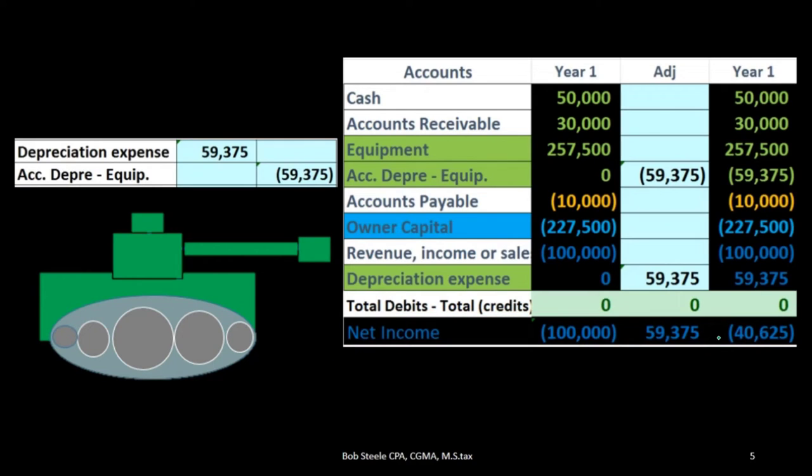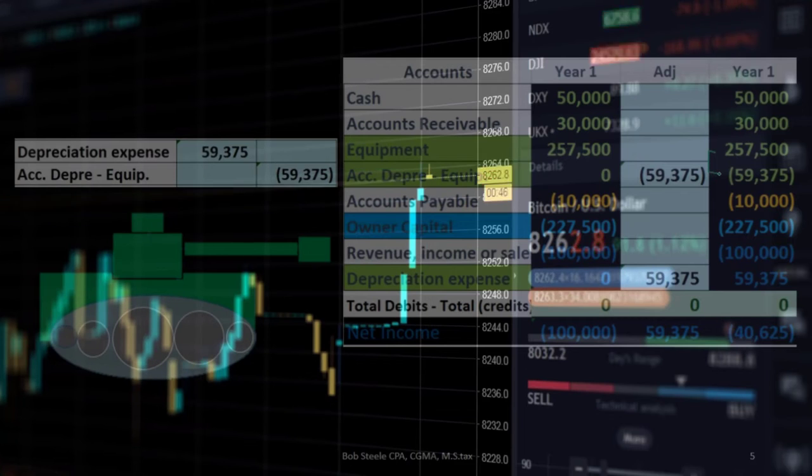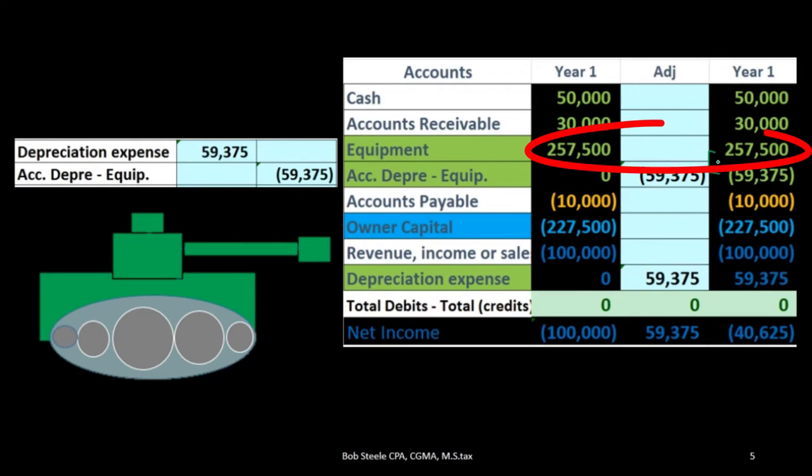We're going to record a contra asset, an asset with a credit balance, in accumulated depreciation of $59,375. The book value is the cost of $257,500 less the accumulated depreciation of $59,375. Accumulated depreciation is different than depreciation expense—it's an asset that will continue to accumulate over the useful life.